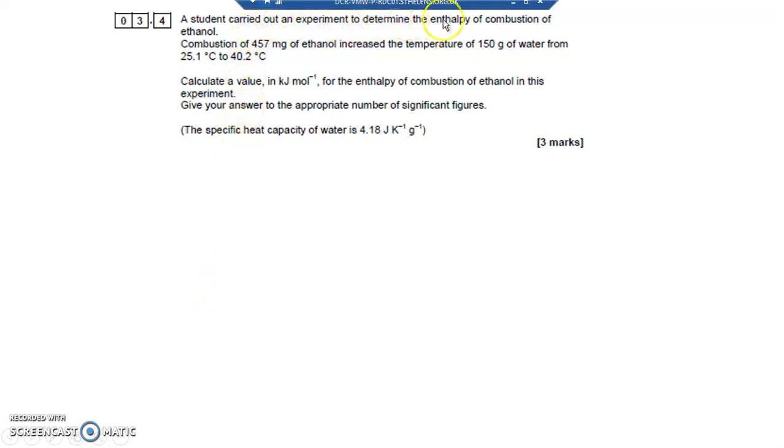A student carried out an experiment to determine the enthalpy of combustion of ethanol. Given a specific heat capacity, I know the equation I'm going to use: Q equals MC delta T, so delta H equals minus MC delta T. Let's have a look at the temperature change.